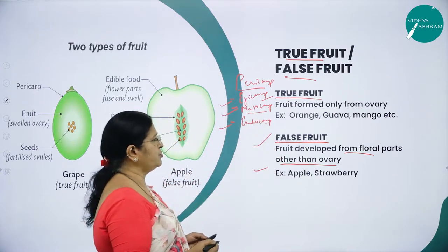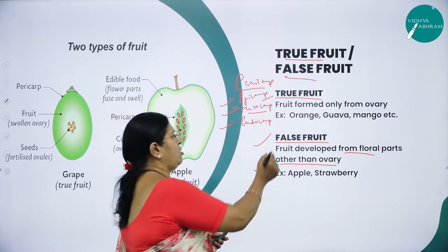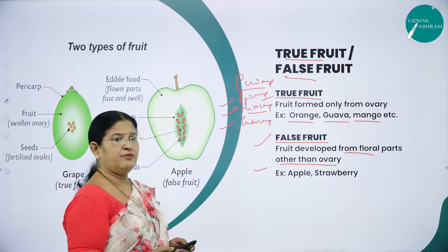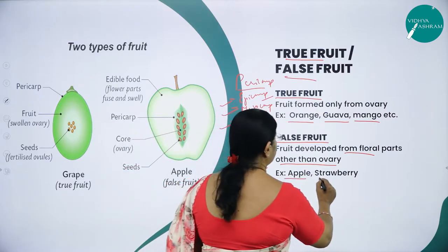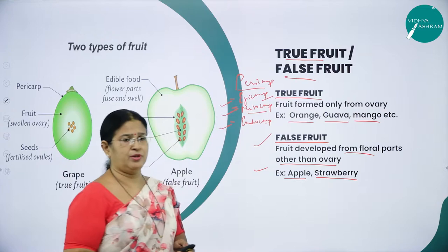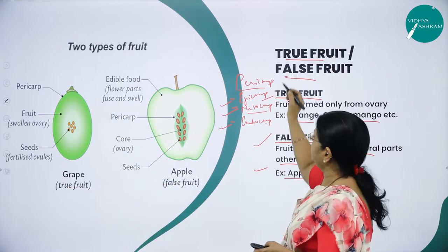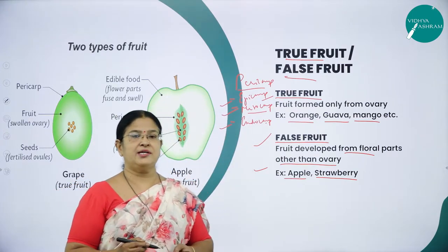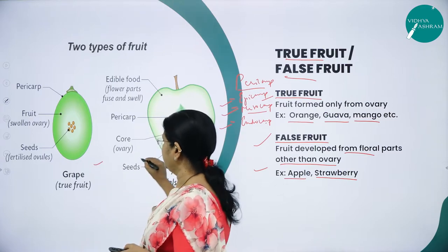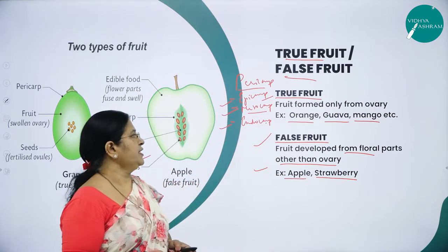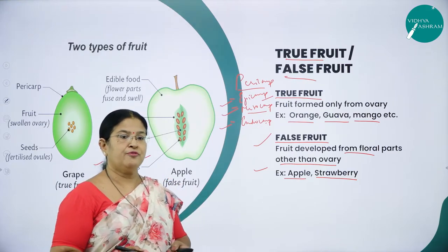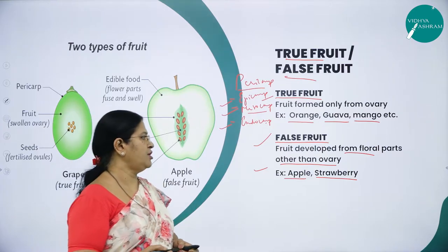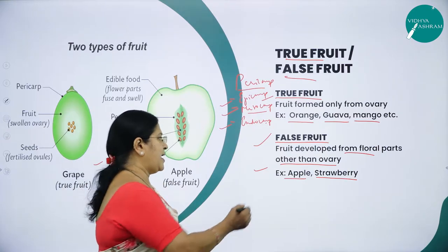Examples of true fruit are orange, guava, and mango. Examples of false fruit are apple and strawberry. A true fruit develops only from the ovary, whereas false fruits develop not from the ovary but from other floral parts like the thalamus.